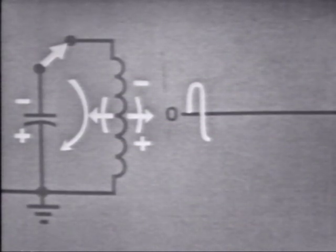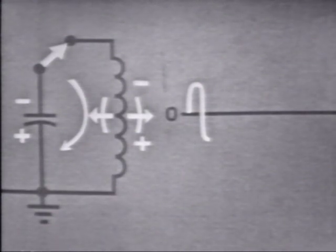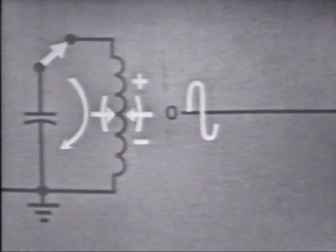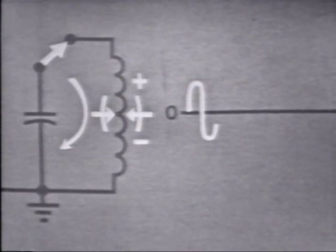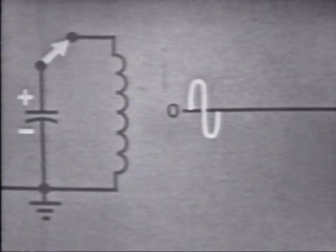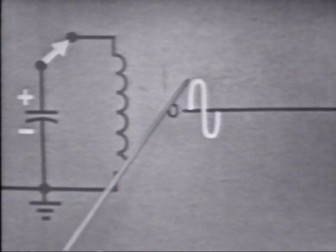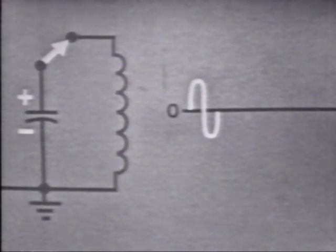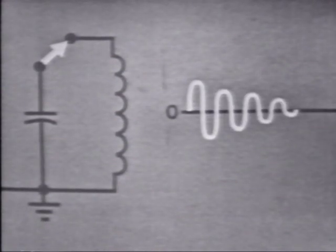At some point current will begin to decrease, and when it does, the magnetic field will start to collapse, reversing direction and returning energy to the circuit, which will cause the capacitor to recharge in the original direction. When the coil's field is completely collapsed, current is zero and the capacitor is charged. Notice that the current on this alternation was not quite as great as the original alternation, due to the circuit resistance not shown in this simplified drawing. As this oscillating action continues, the output waveform will continually decrease until the energy in the circuit is completely absorbed.